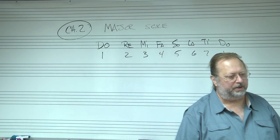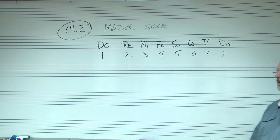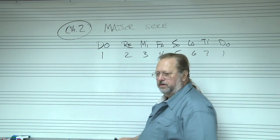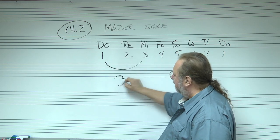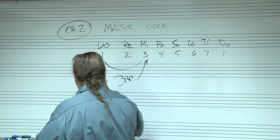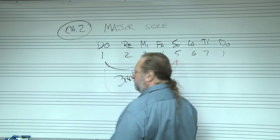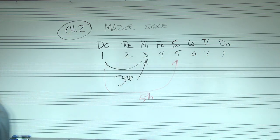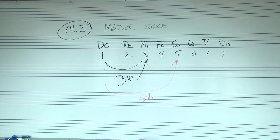If you want to calculate the distance from one note to the next — say from this note to that note — we call that a third, because it goes one, two, three. If we want to calculate the distance from this note to this note, that's called a fifth. So when we're playing the piano, here's a scale: one, two, three — this distance is called a third. This distance here — one, two, three, four, five — that's called a fifth.